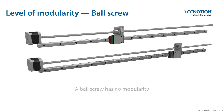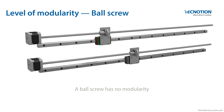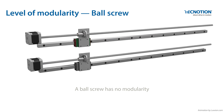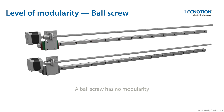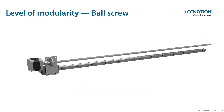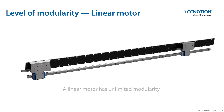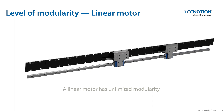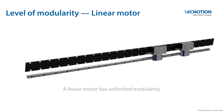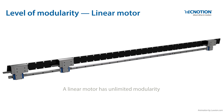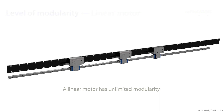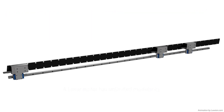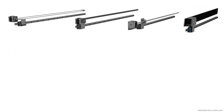A ball screw system cannot be enlarged indefinitely. If the application becomes longer or more demanding, you need to use several ball screws. The length of a linear motor system is unlimited. You can also add as many motors as desired and move them independently on the magnet track.